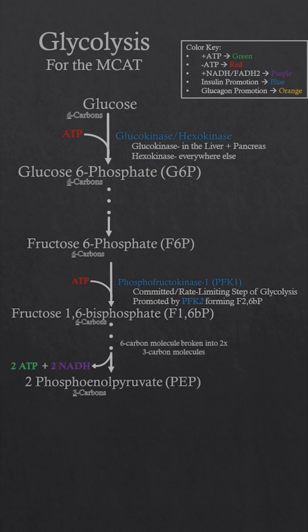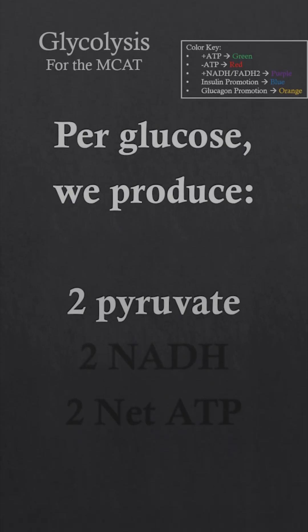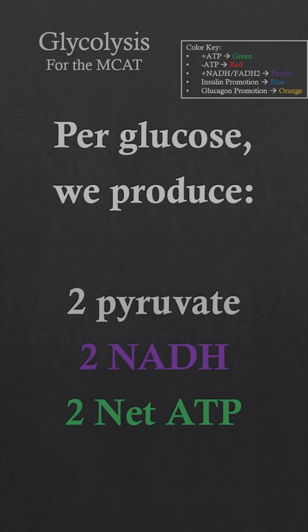We skip a few more steps where the six-carbon molecule is broken into two three-carbon molecules, producing two ATP and two NADH along the way. We end up with two phosphoenolpyruvate (PEP), a three-carbon molecule. Running PEP through pyruvate kinase produces two more ATP as well as our final product pyruvate, also a three-carbon molecule — so there will be two of them. Per glucose, we produce two pyruvate, two NADH, and two net ATP.